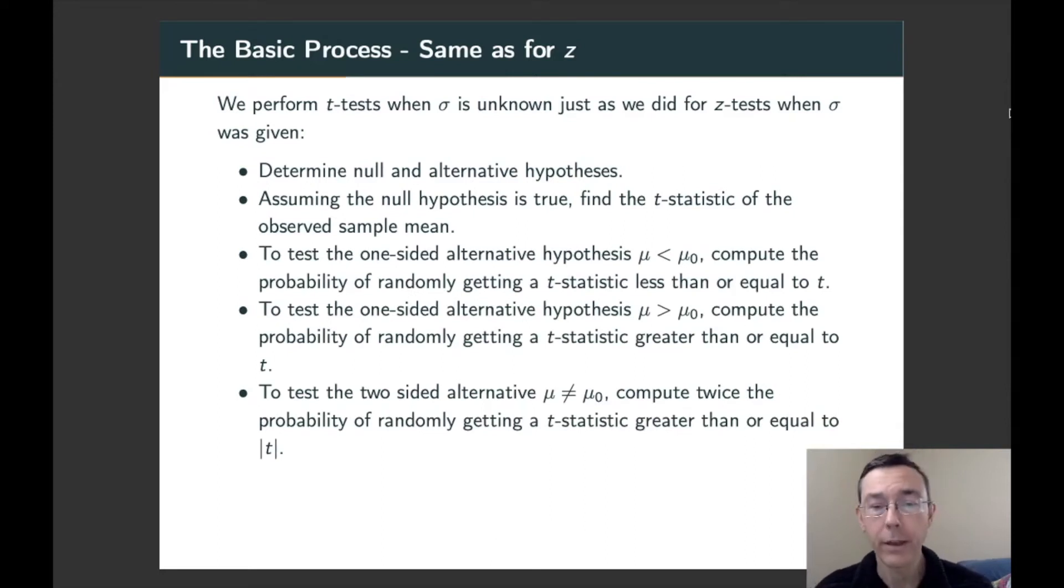If we have a left-sided alternative hypothesis, we'll get the probability that we randomly get a t statistic less than or equal to the one we got when the null hypothesis is true. For a right-sided alternative hypothesis mu greater than mu naught, we'll want the probability of randomly getting a t statistic greater than the one we got. Finally, if it's a two-sided test, then we will want to get either one of those two and then double it.